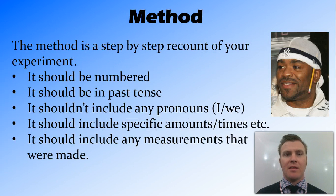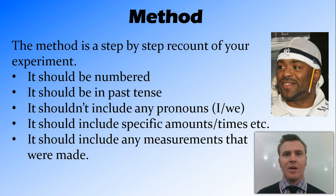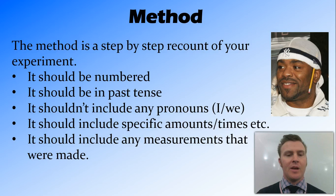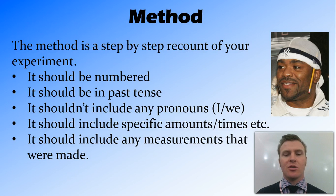The method is a step-by-step recount of your experiment — the things that you did and how you conducted your experiment. Your method should be numbered, it should be in past tense, it shouldn't include any pronouns like I or we, it should include specific amounts and times, and it should include any measurements that you made.